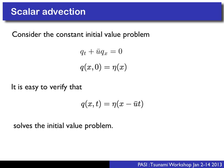Now let's back up to a really simple scalar advection problem, because we can understand a lot about how to solve a Riemann problem by looking at this simple case. We have a scalar Q, a constant velocity field U-bar, and some initial conditions. It's easy to show that the solution is simply eta evaluated at x minus u*t — you can differentiate with respect to time and space and exactly show you get zero.